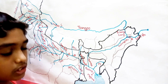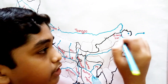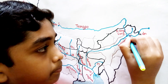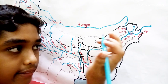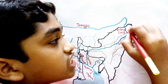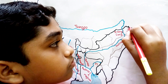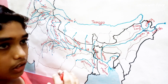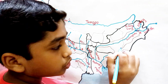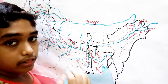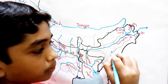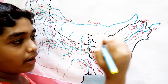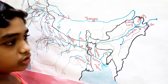Another Left Bank tributary is Dibang, whose source is in Arunachal Pradesh. It flows through Arunachal Pradesh and Assam, and joins with Lohit and then with Brahmaputra. The next Left Bank tributary is Dhansiri, whose source is in Assam. It flows through Assam and joins the Brahmaputra.